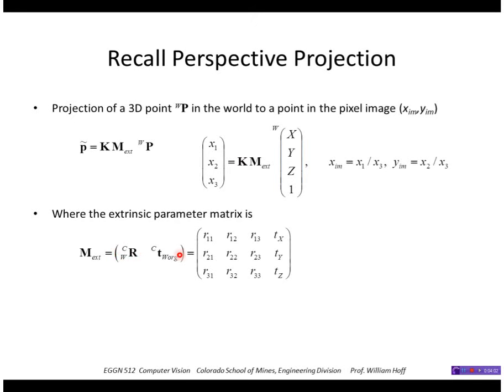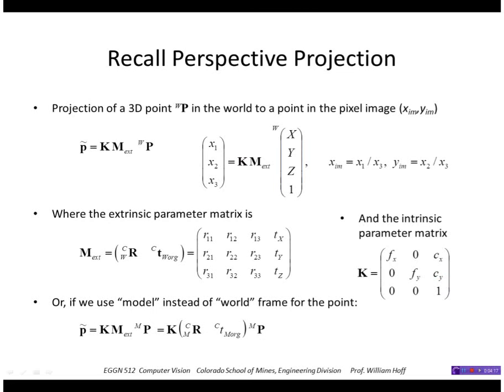The extrinsic parameter matrix is the pose of the camera—actually it's the world to camera pose—the rotation part here and the translation part here. The intrinsic parameter matrix is this 3x3 matrix with the focal length in the diagonal and the image center cx and cy. We're actually going to be using the model coordinate system, not a world coordinate system. It's just a change of name, but the equations are exactly the same except we replace w by m.